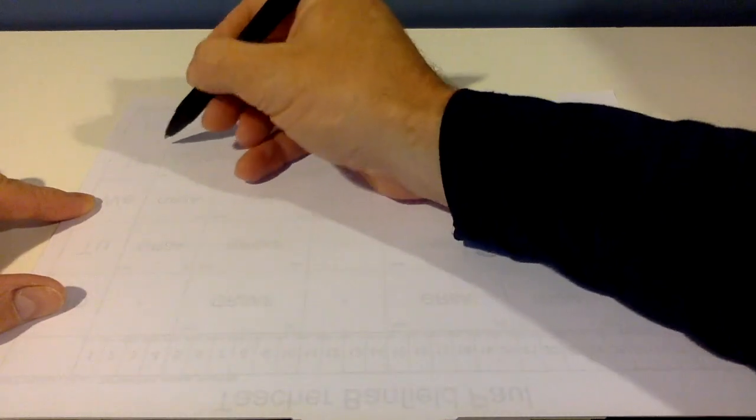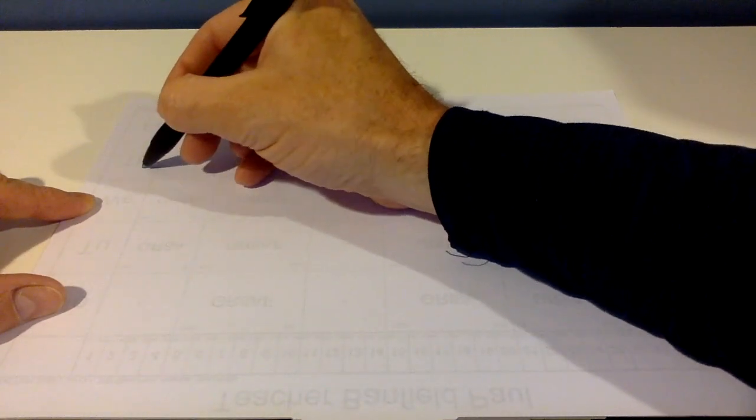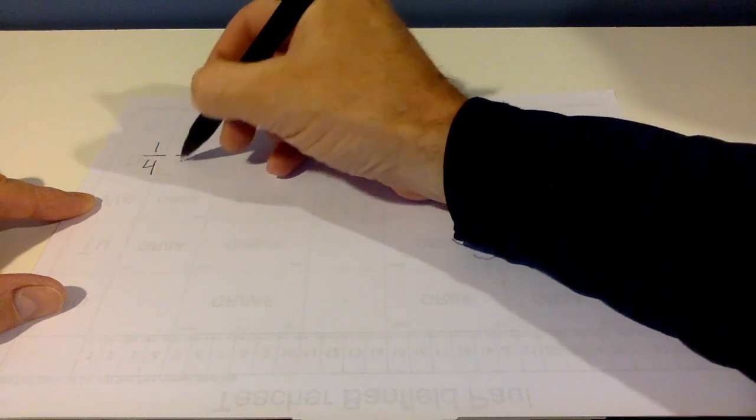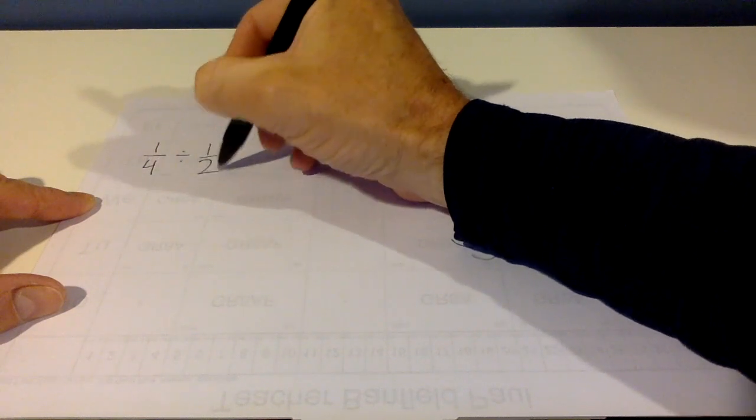Let's look at an easy-ish one. Let's go 1 quarter divided by 1 half.